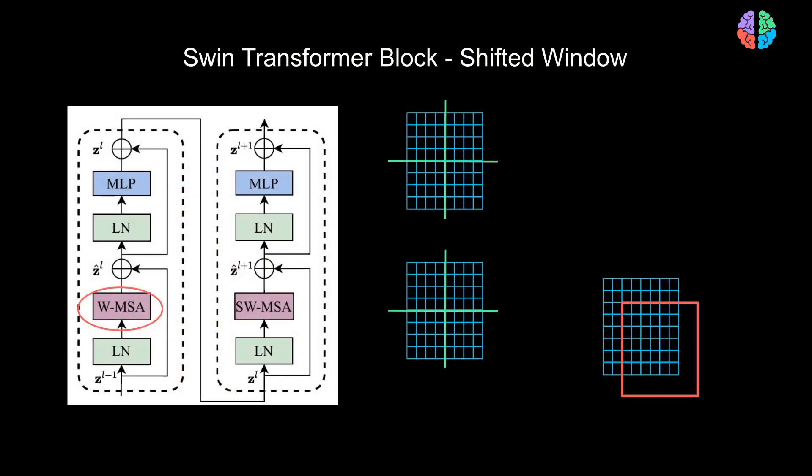WMSA is where we divide the input image into four windows and compute attention for patches within the window. This is straightforward and happens in the first layer of the Swin Transformer block. The next stage is the shifted window MSA. If we can recollect what happens in convolutional neural networks, there's a kernel that slides along the image and computes the outputs. But something like that is missing in Transformers.